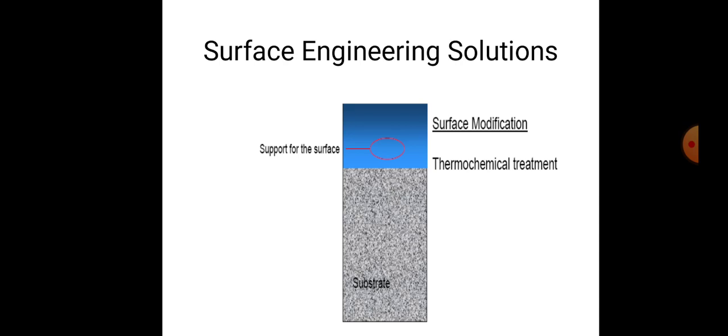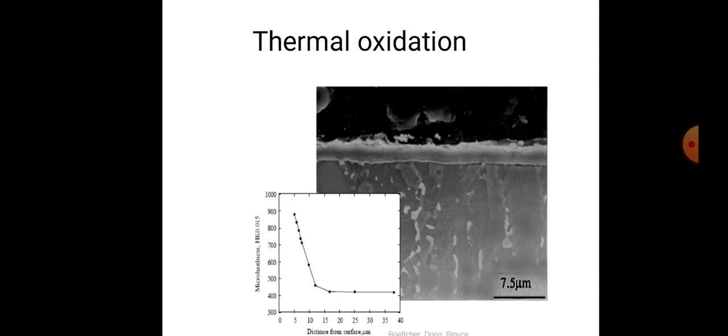The surface modification of these surfaces is done through thermochemical treatment on the object. This is thermal oxidation — micro hardness increases with distance from the surface as heating increases. The hardness is maximum at maximum temperature, occurring near the heat source. The range of that particular hardness layer is 7.5 micrometers.